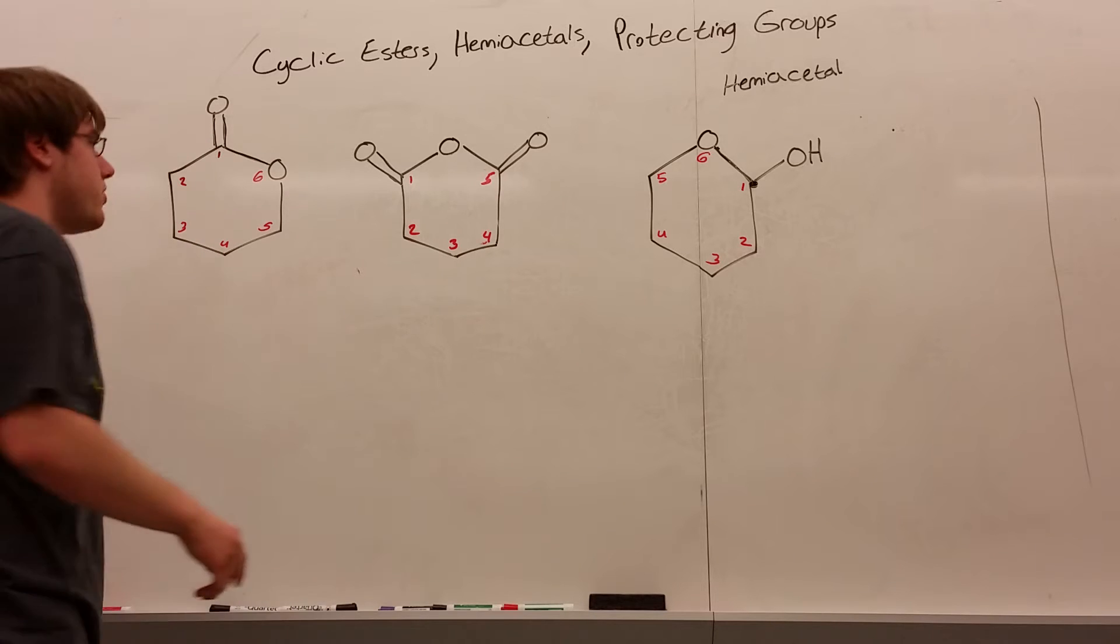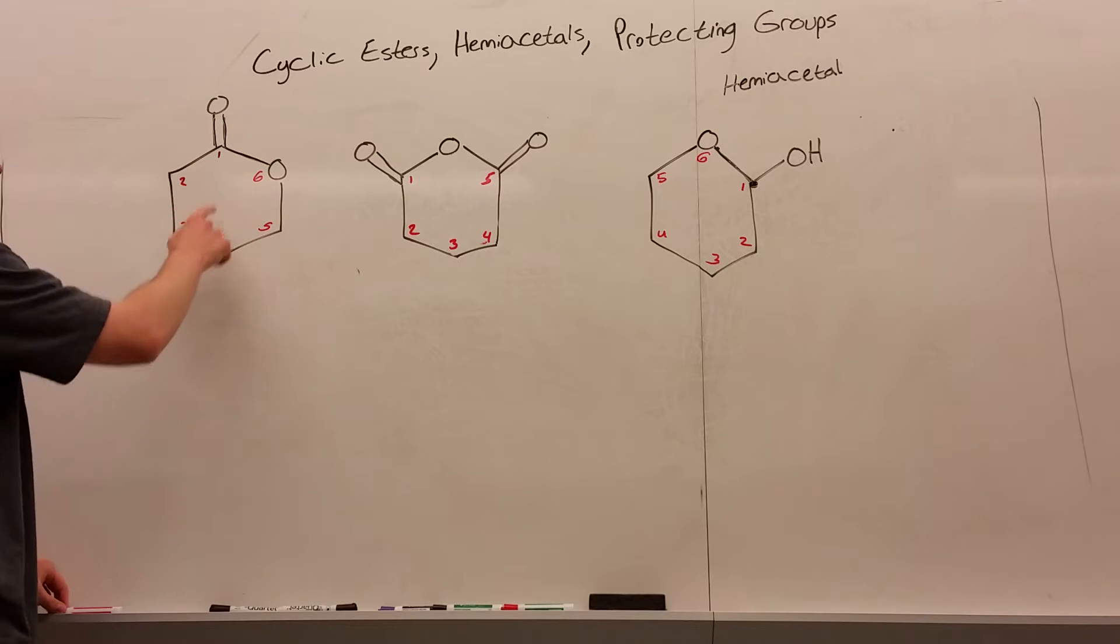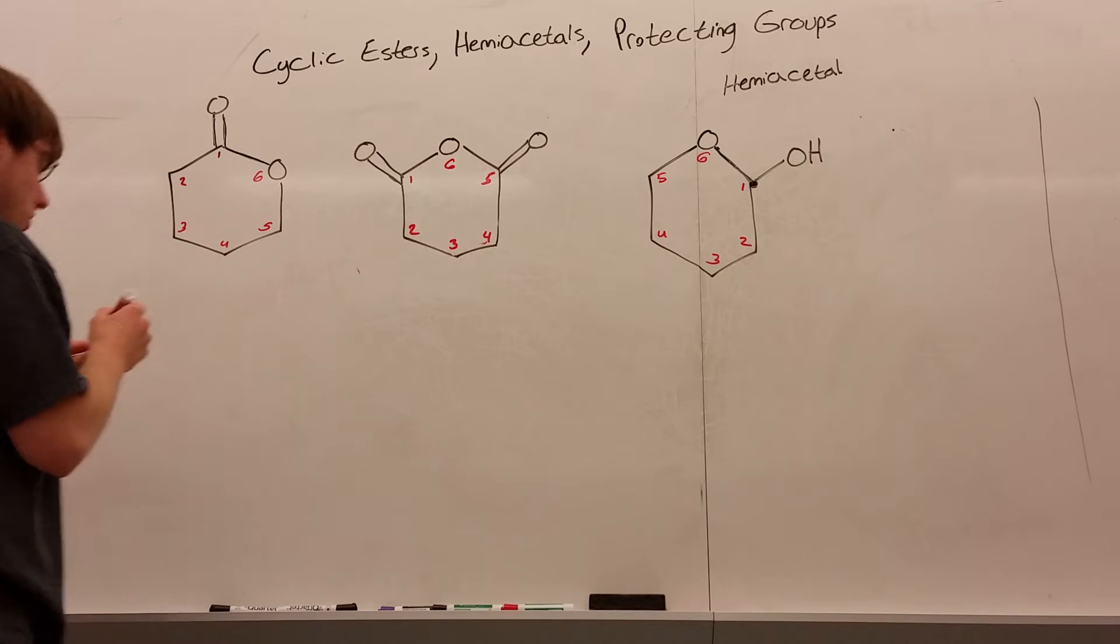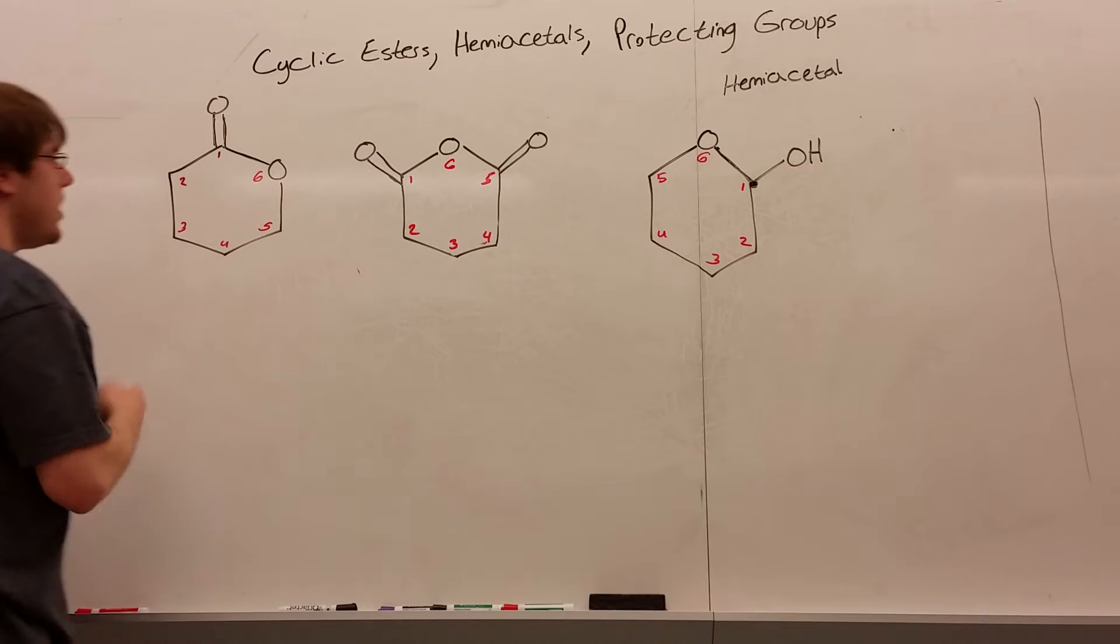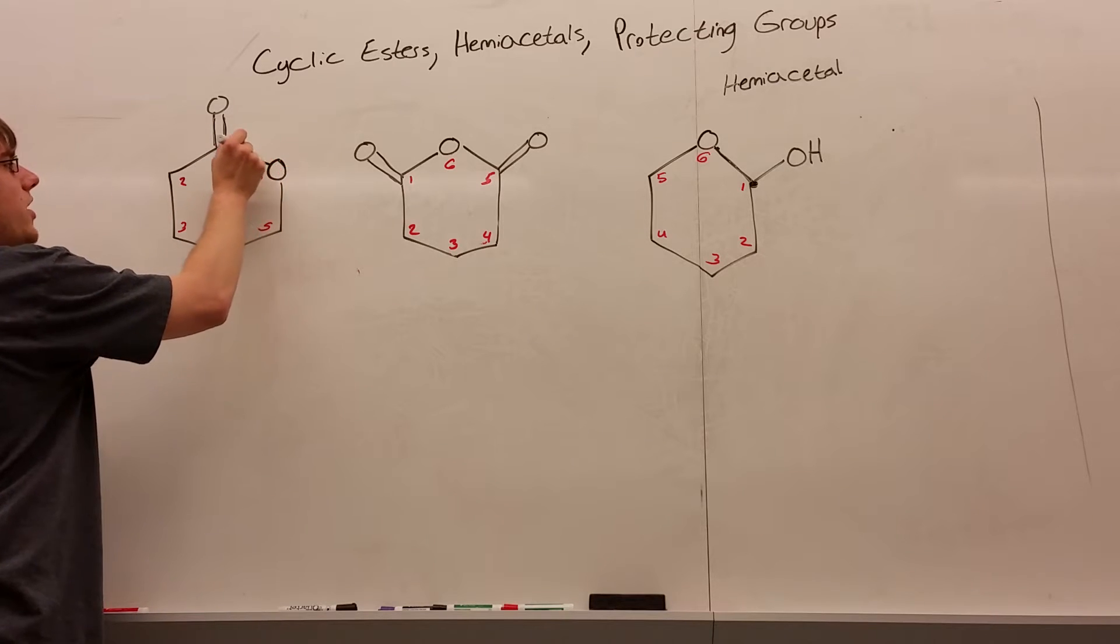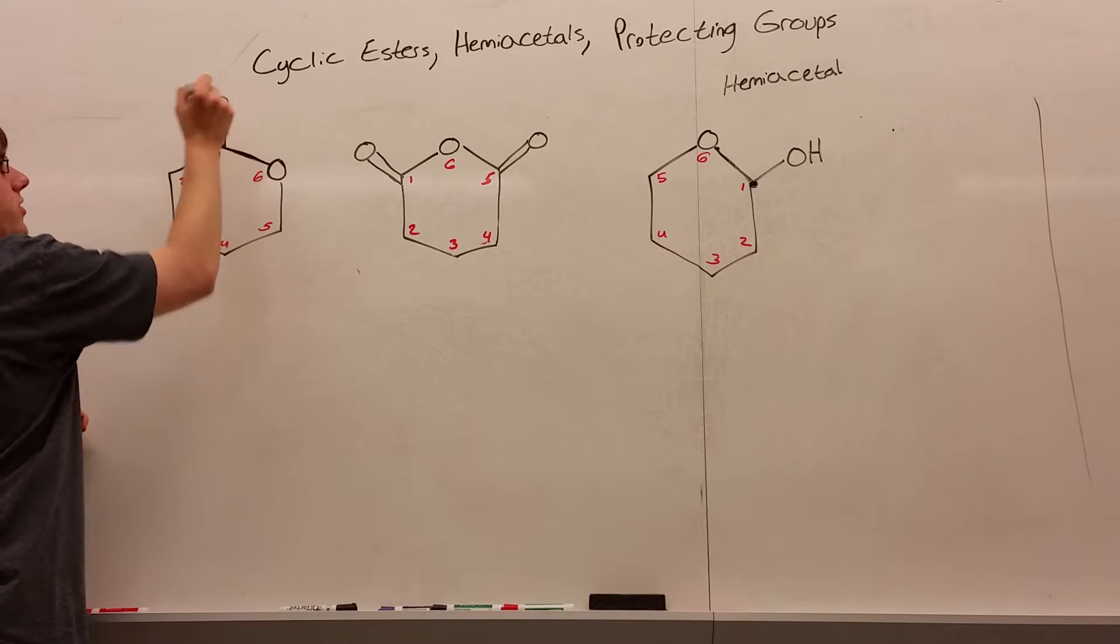Well, it's fairly straightforward. All I've done is I've numbered these carbons, and I've also numbered the oxygen that's part of the ring. For this one now, it's numbered. What you are going to do is you're going to find the oxygen in the ring, and you're going to look for the single bond that connects it to another carbon with an oxygen on it.